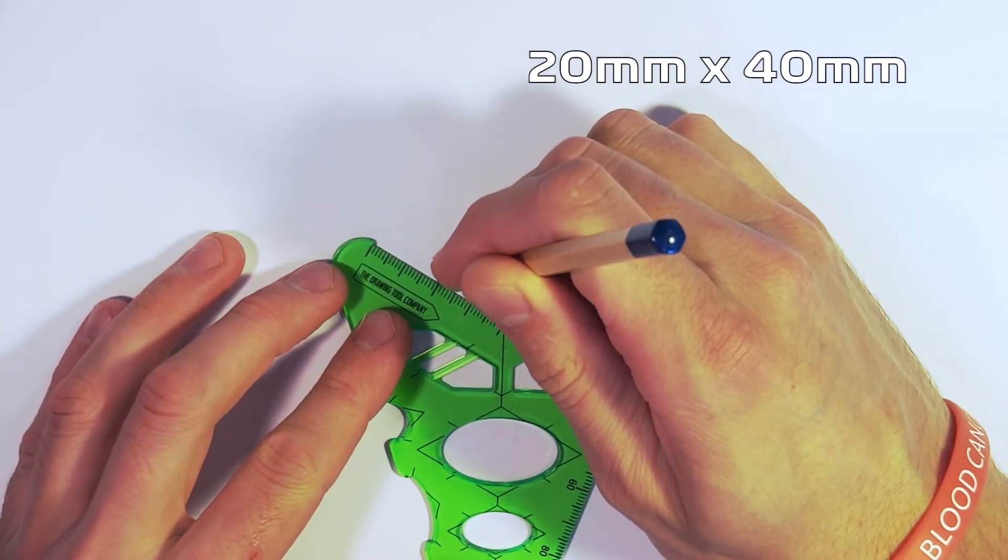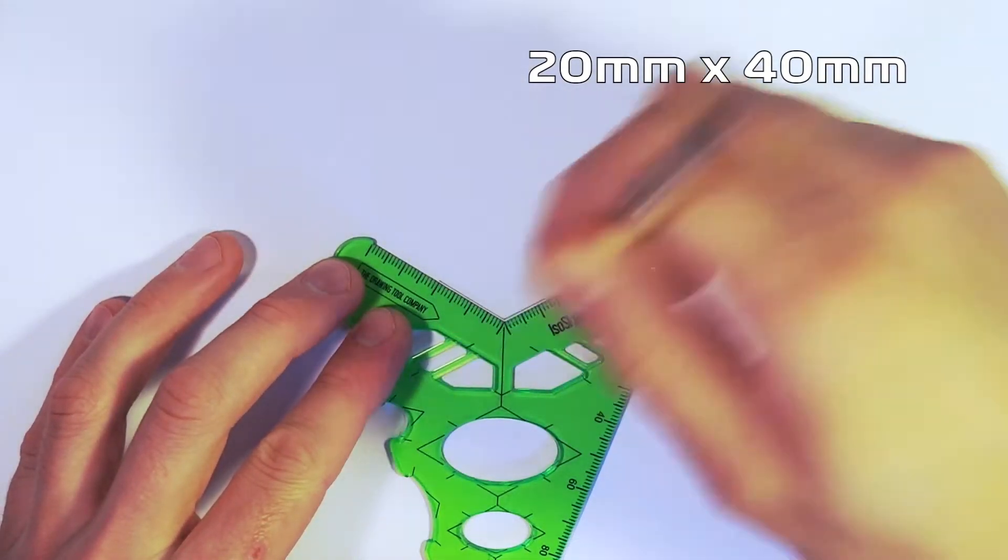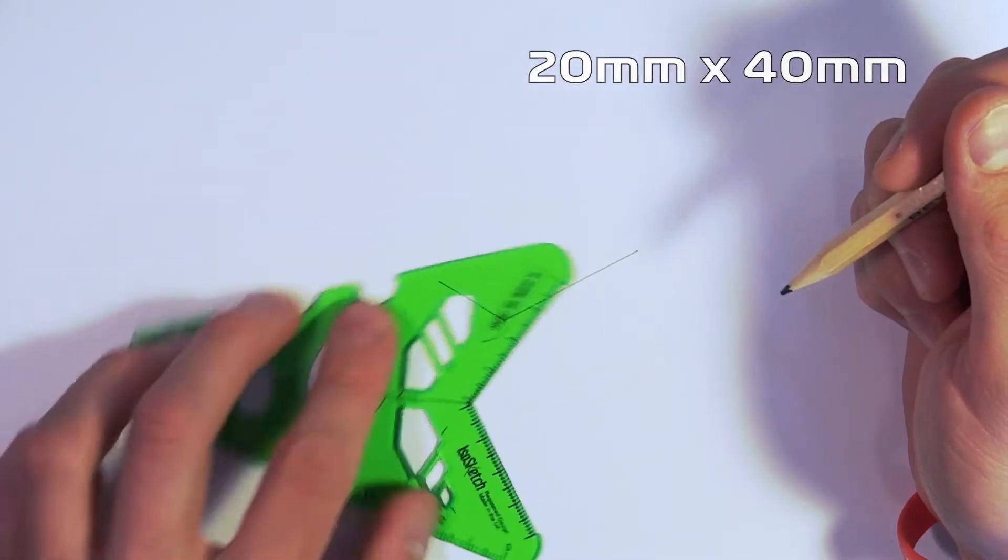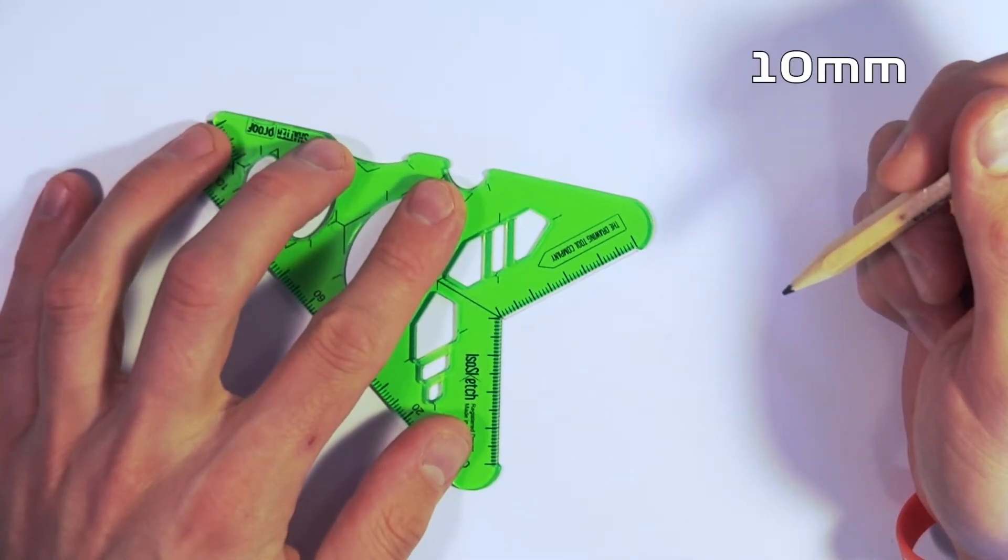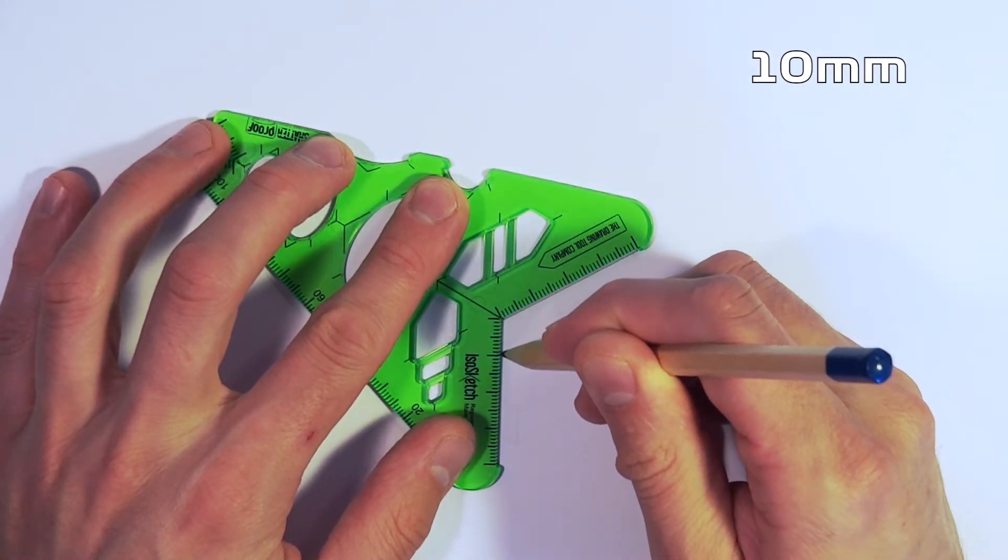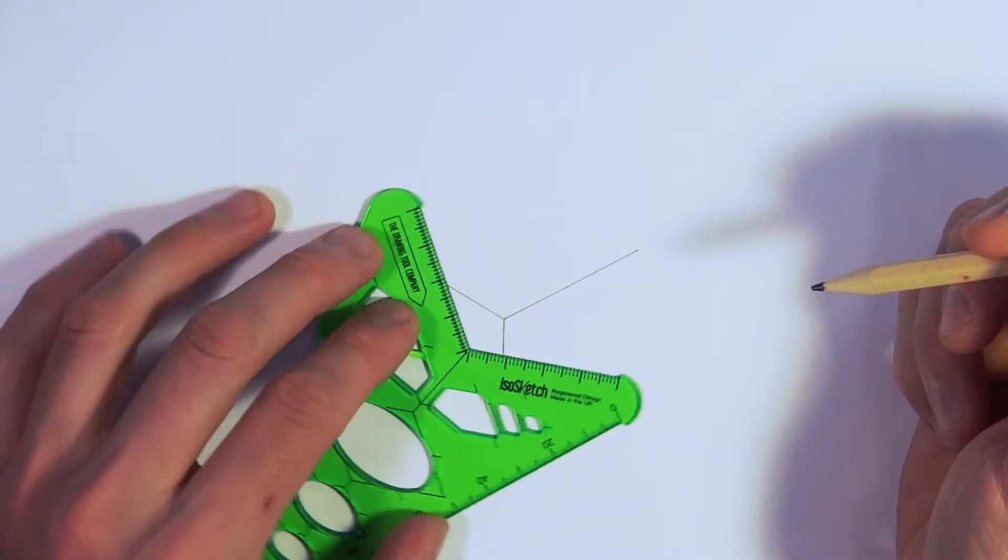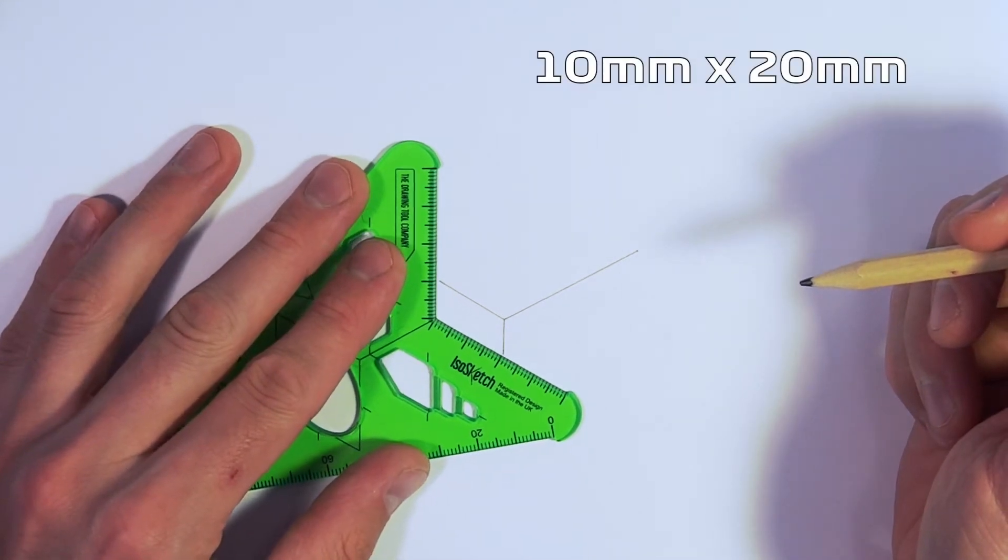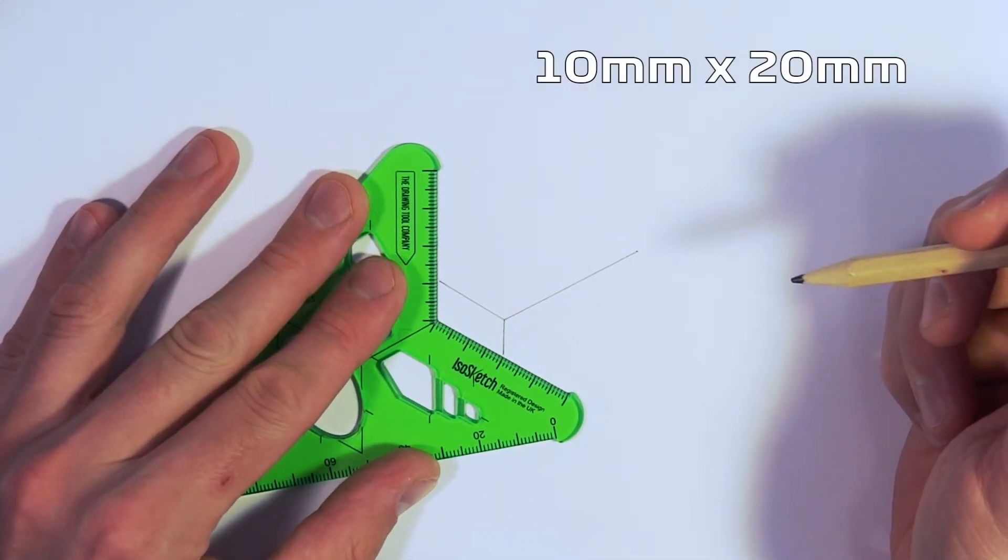So we're going to start off just using the measurements on the screen and drawing the back part of our chassis using the ISO sketch 3D drawing tool. And you can see here that we're using small measurements, 40 millimeters which is four centimeters, 20 millimeters which is two centimeters, and 10 millimeters which is one centimeter.